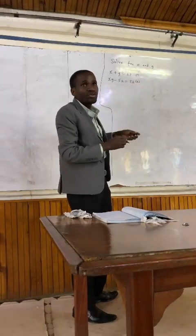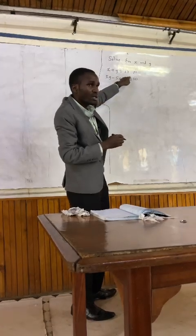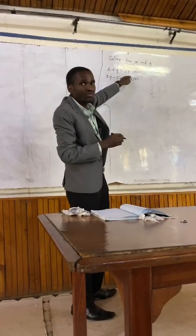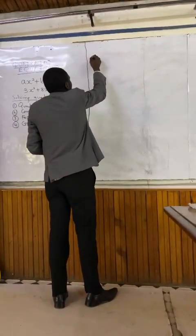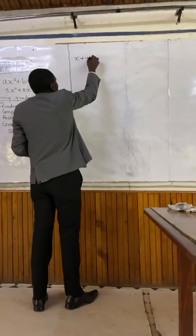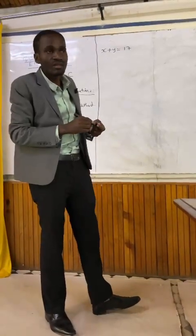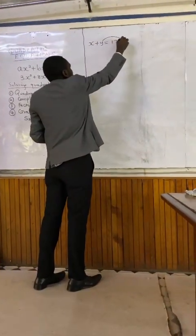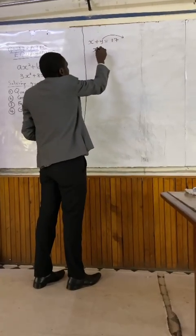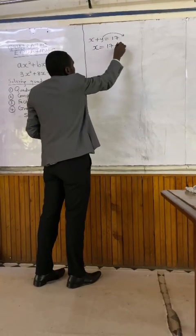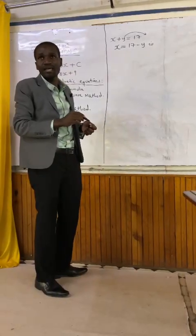You need to go to the first equation: x plus y is equal to 17. Then make one of those variables or letters the subject of the formula. So I'll come and write that down. So I have x plus y is equal to — which one can we make the subject of the formula? X. So we'll take y on this side. Y has its sign positive; once it crosses the equal sign, it becomes negative. So we've made x the subject of the formula.